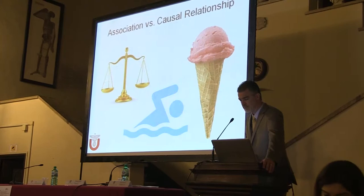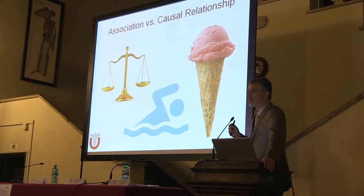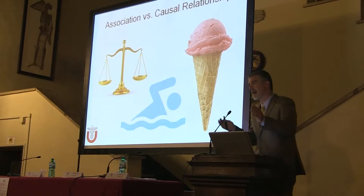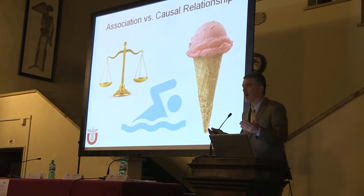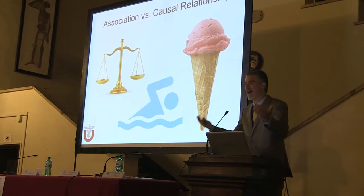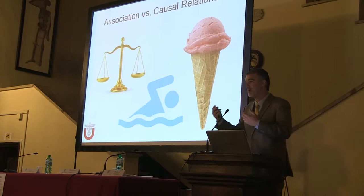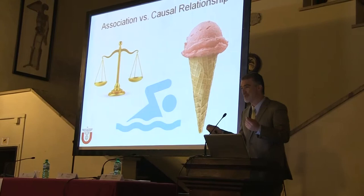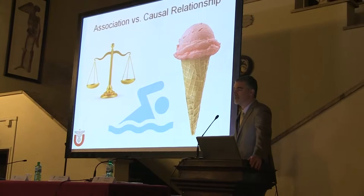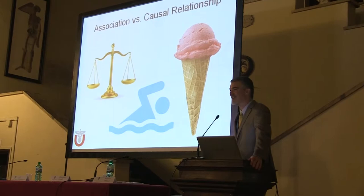Before reviewing them, one important caution: the difference between an association and a causal relationship. An association is where two things happen together at the same time. For example, my children stop climbing trees when they go to school, and the leaves change color — one has nothing to do with the other. Similarly, ice cream sales and swimming both go up in summer, but it's the hot weather causing both.